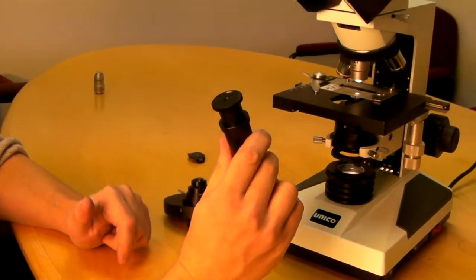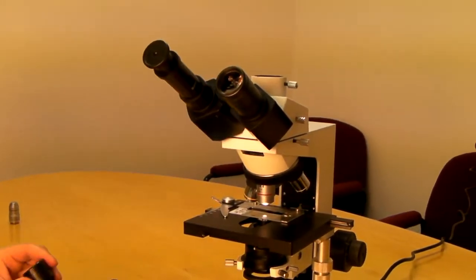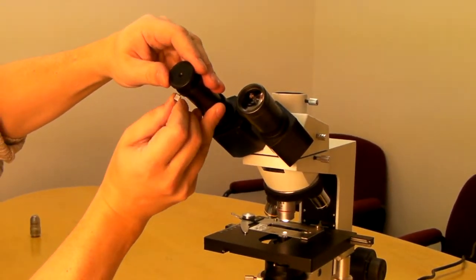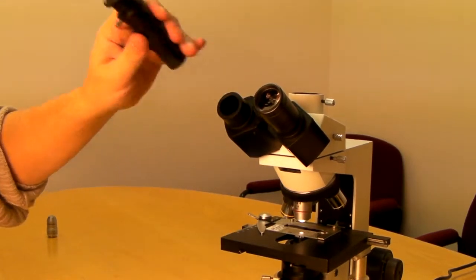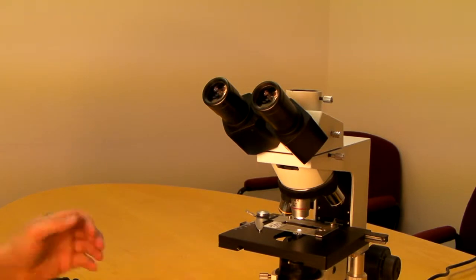And also a centering telescope. The centering telescope is installed in place of the regular eyepiece, and then by adjusting the height you can put this lens in focus as well. Now we are ready to assemble.